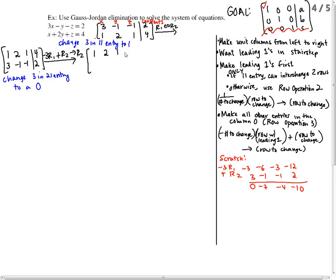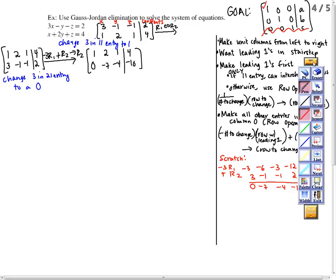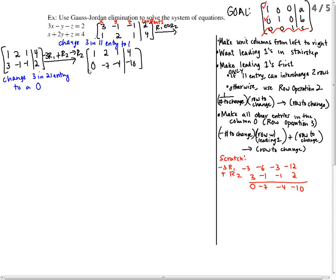1, 2, 1, 4, 0, negative 7, negative 4, negative 10. If I look at my goal, I've got my 0 here. This is a unit column. We successfully pivoted on the 1,1 entry. We made a unit column. Now we're going to move over and make the next unit column.